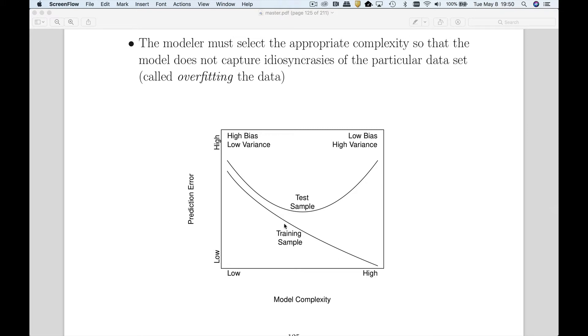Now what usually happens is as you make your model more complex, you're going to do a better job of fitting. The training sample prediction error is just going to decrease. However, at some point you're going to overfit. That's why we need some sort of alternative approach to evaluating this model.